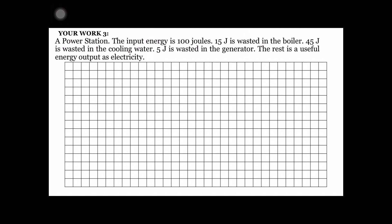Your work number three is a power station. The input energy is 100 joules. 15 joules is wasted in the boiler, 45 joules is wasted in the cooling water, and 5 joules is wasted in the generator. The rest is useful energy output as electricity. There are three wasted energies, and you're going to draw the Sankey Diagram for this. Do all of these in your notebook and then submit in the platform I'll ask you to use.